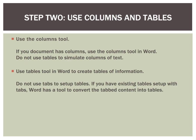Step one in creating an accessible Microsoft Word document is to use styles to identify what the particular content in your document is. For example, you could use a heading style to identify the different headings and their different levels within your document, so that a screen reader can read that information back and the individual can determine exactly what part of the document they wish to go to.